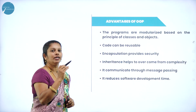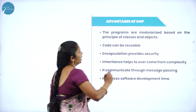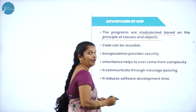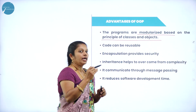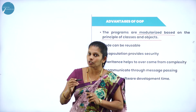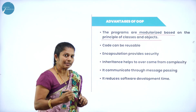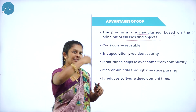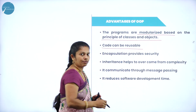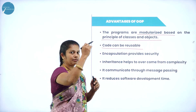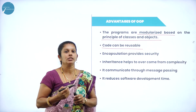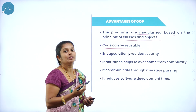We will discuss about the advantages of Hoops. Programs are modularized based on the principle of classes and objects. It uses a modular technique that divides a large program into small sub-programs. After solving each sub-program, the result is generated back to the main program. Then code can be reusable — in inheritance, whatever properties the parent has, the same properties are transferred, so there is no need to write the codes again. Obviously the code can be reused.